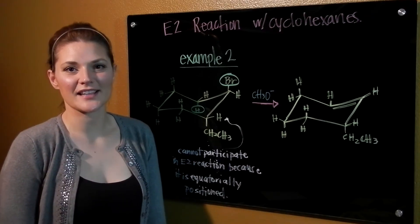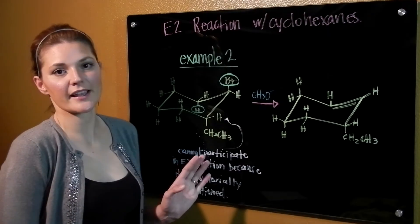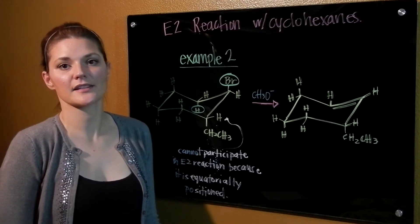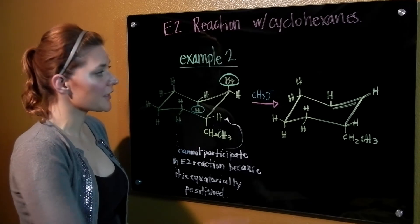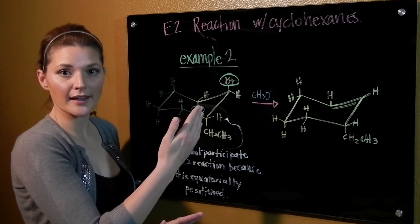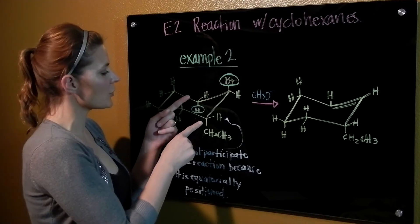Okay, so let's take a look at our next example. So you may take a look at the cyclohexane and think it's exactly the same one. But there's actually one key difference. So in this case here, we still have our bromine located axially. And we still have two beta carbons.